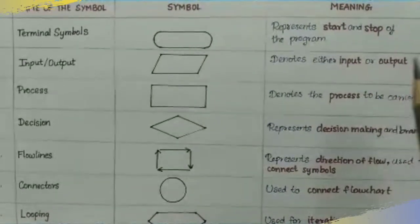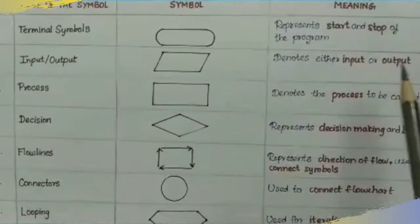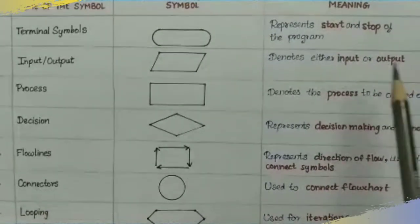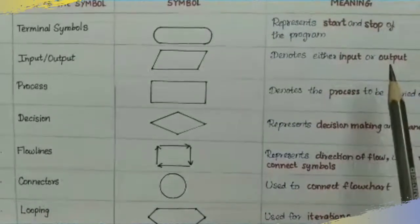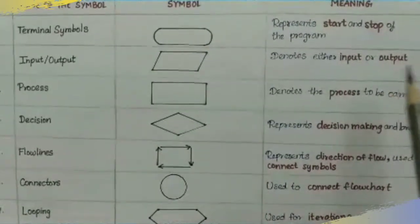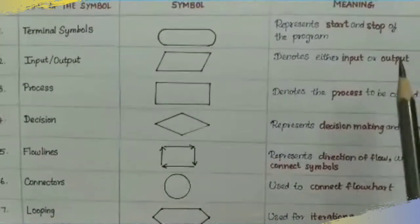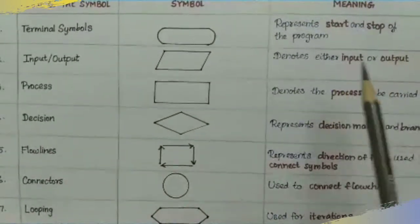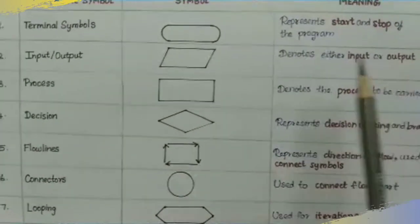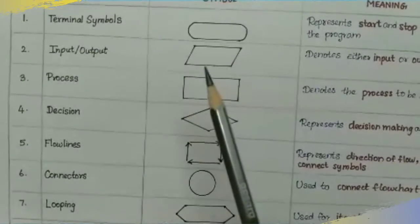The output represents statements — for example, when I am going to calculate a value or use a print statement, I am going to use the output. This is the input or output symbol. This symbol we will write using a parallelogram shape.